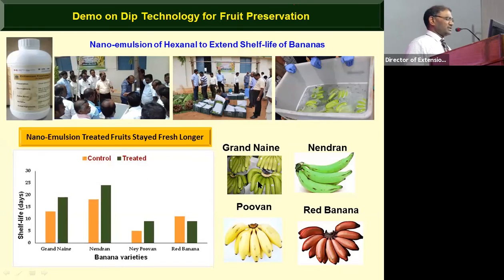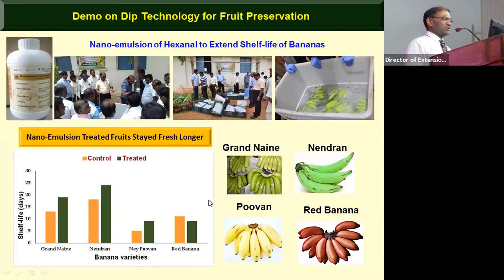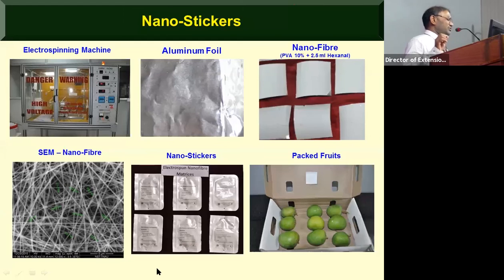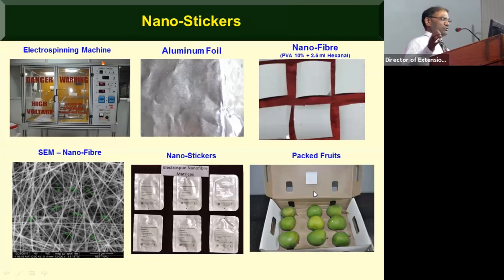Since people are afraid of chemicals when dipping fruits in a solution, we developed a different format using nano-fiber technology. Volatile compounds are loaded into the nano-fiber and made into a small sticker. You place one small sticker inside a 3-kg fruit box — that is enough to keep the fruit fresh for two to three weeks. The cost of the sticker is only two rupees. We have a patented product for this.